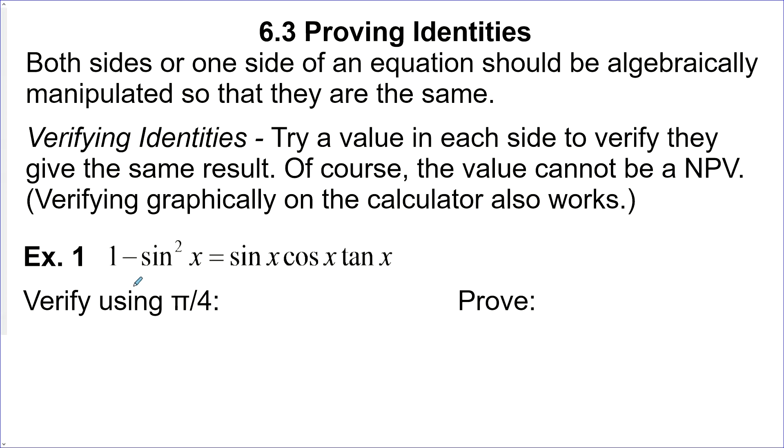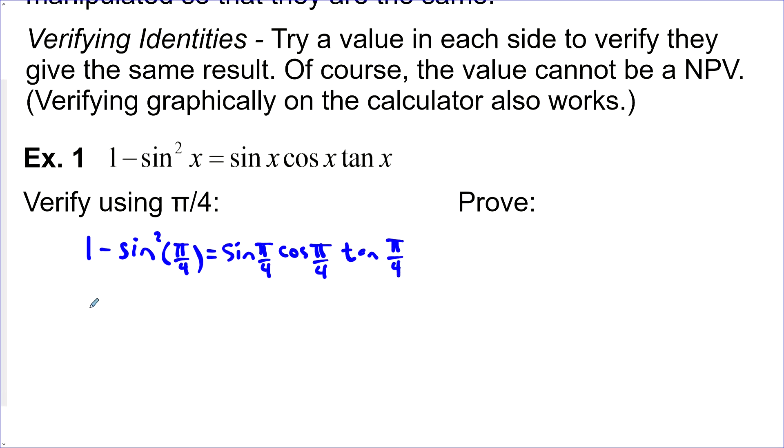Let's try example one. Verify using π/4: 1 - sin²(π/4) = sin(π/4)cos(π/4)tan(π/4). π/4 is just √2/2, and that would be squared. On this side, we got sin(π/4), so √2/2, cos(π/4) √2/2, and tan(π/4) is just 1.